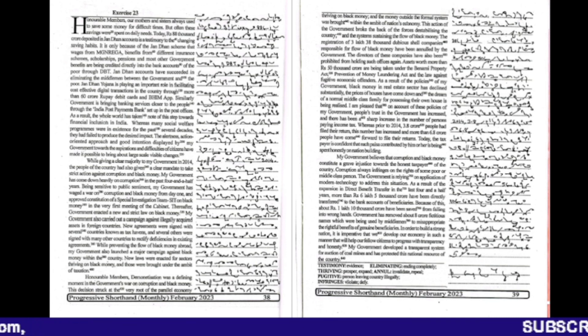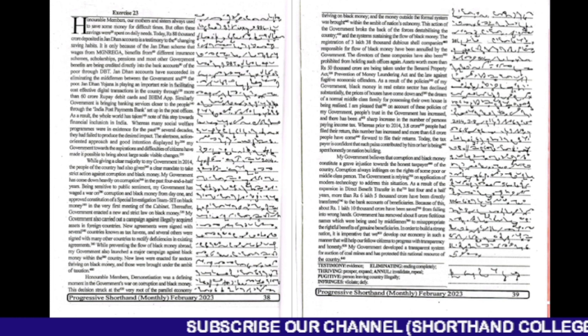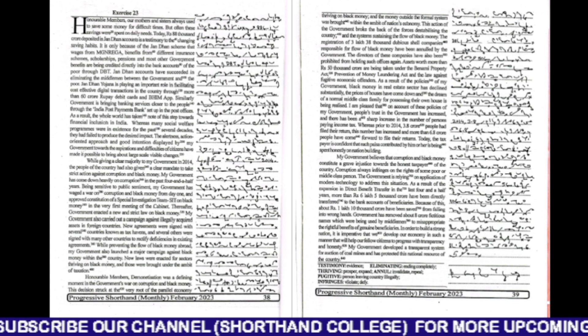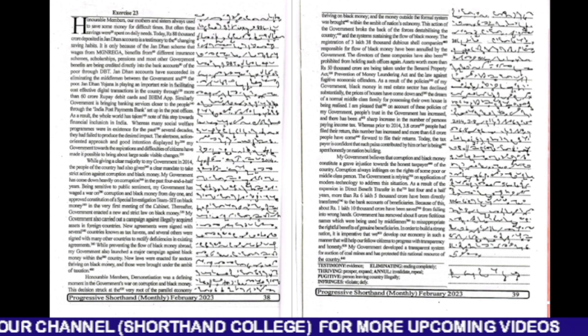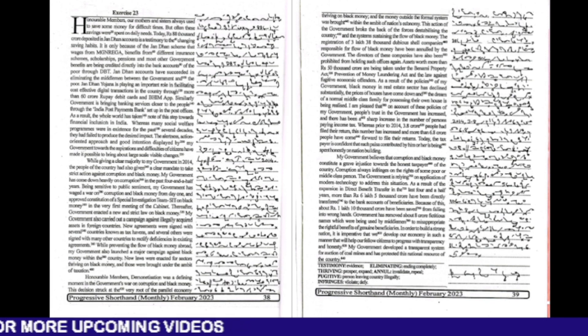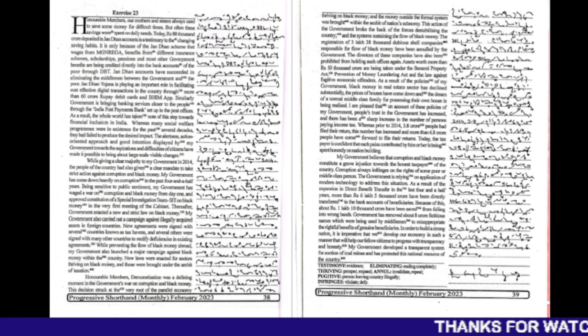Thereafter, government enacted a new and strict law on black money. My government also carried out a campaign against illegally acquired assets in foreign countries. New agreements were signed with several countries known as tax havens and others were signed with many other countries to rectify deficiencies in existing agreements.